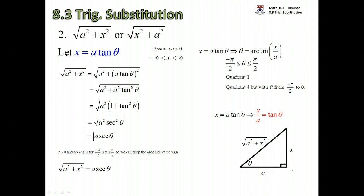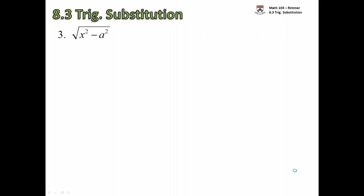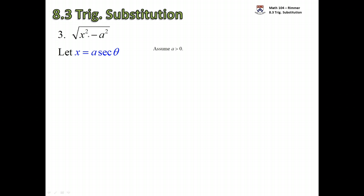Finally, the third situation is the root of x squared minus a squared. The substitution that works here is letting x equal a·sec(θ), again assuming a is positive. What restrictions do we need on x? If x is zero, or if x has absolute value smaller than a, we'd get the square root of a negative number. So x must be either bigger than a or smaller than negative a.